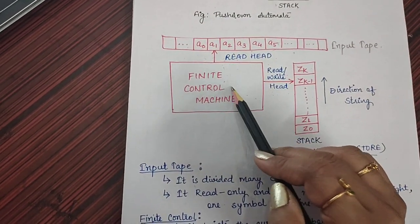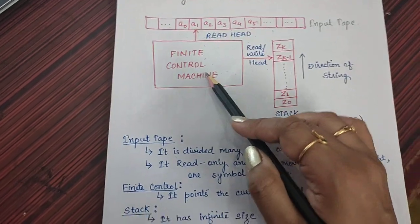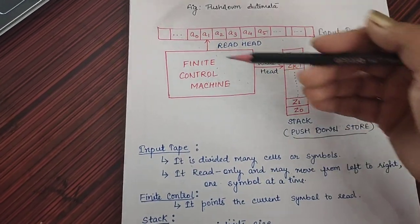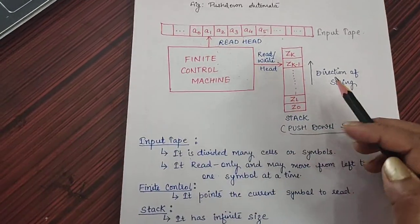The second is finite control machine. This finite control machine points the current symbol to read, whether it will be a stack or it will be an input tape. It will read the current symbol.